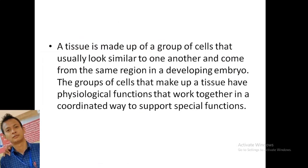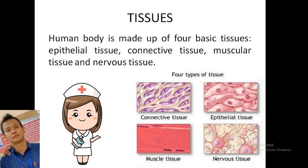Tissue is made of a group of cells that usually look similar to one another and come from the same region in the developing embryo. The group of cells that make up a tissue have a physiological function and work together in a coordinated way to support special functions. Human tissues are divided into four types: epithelium tissue, connective tissue, muscular tissues, and nervous tissues.